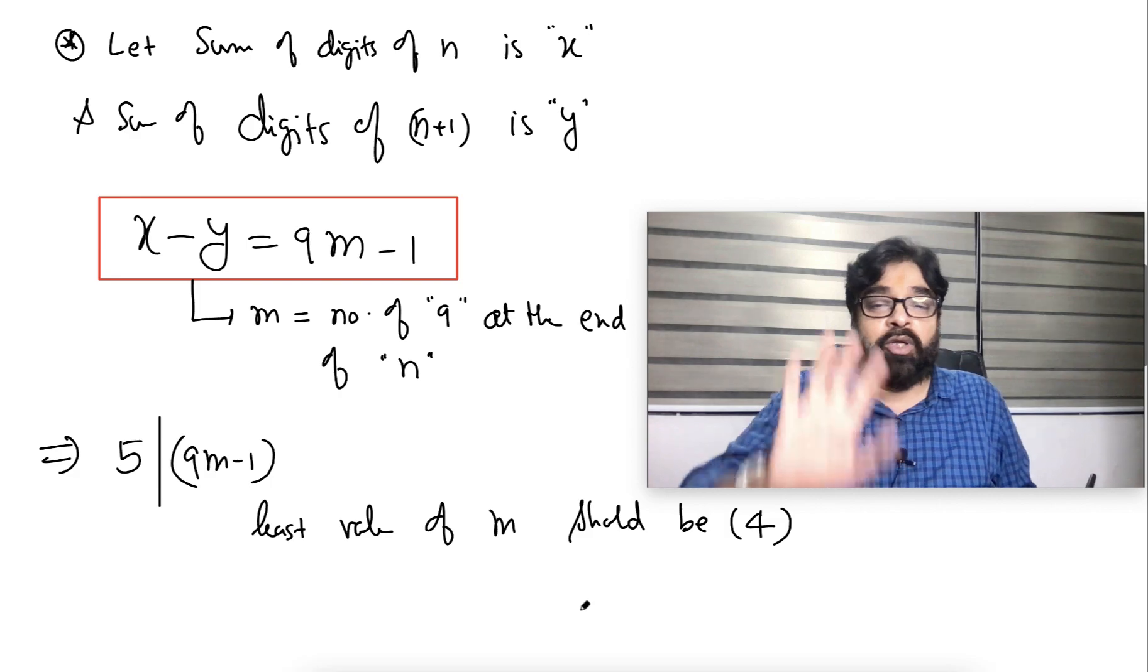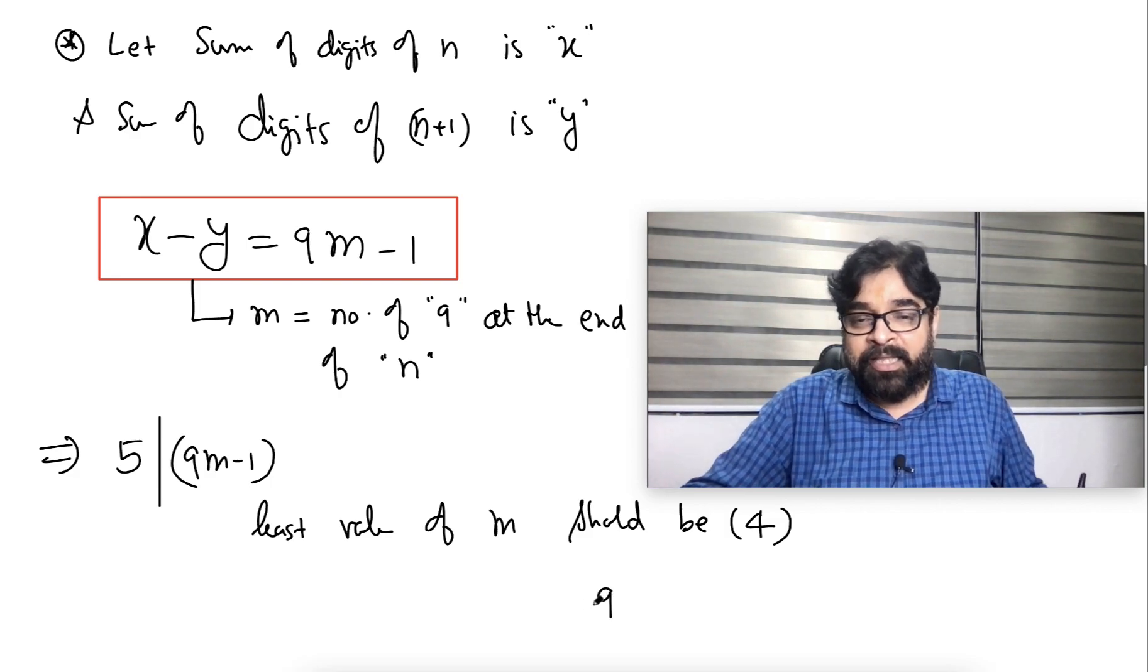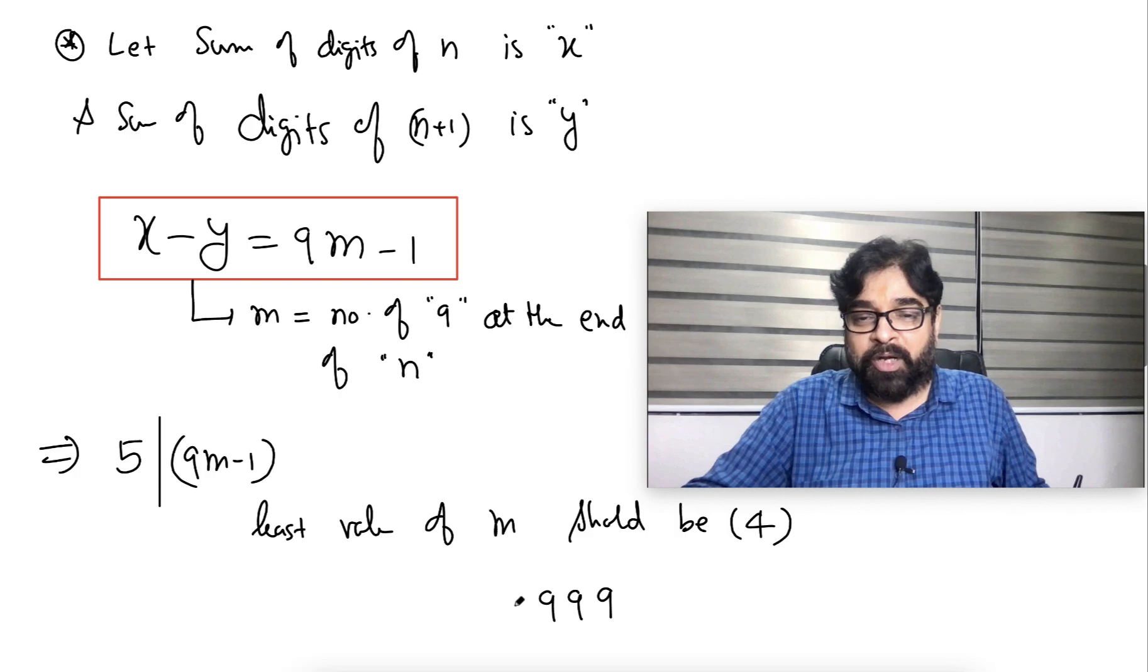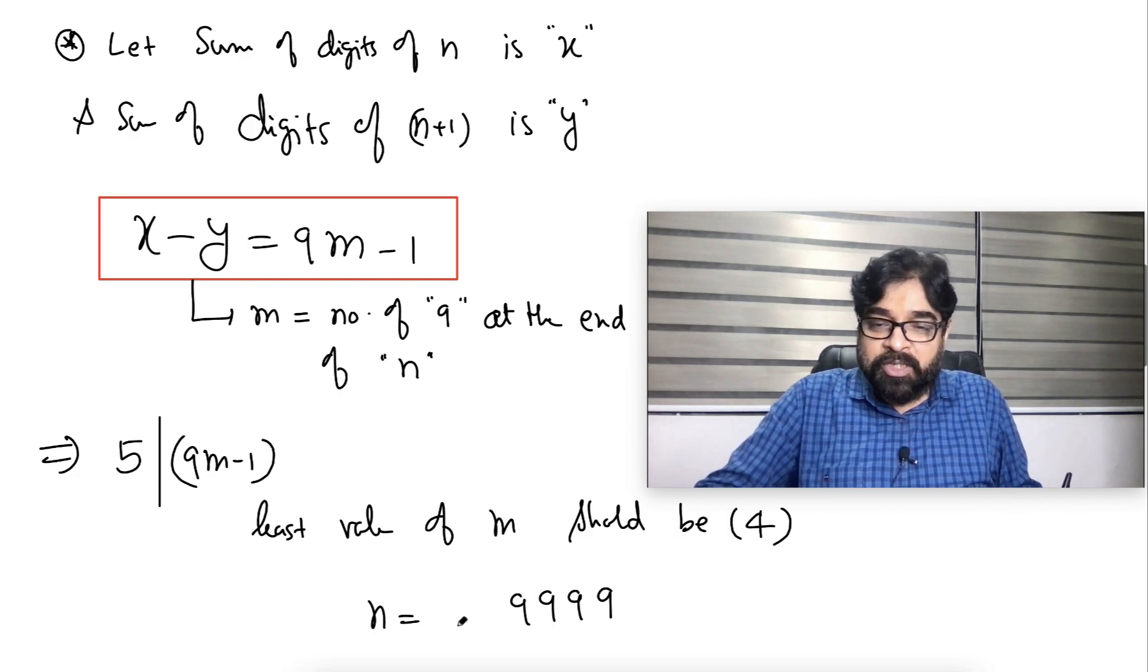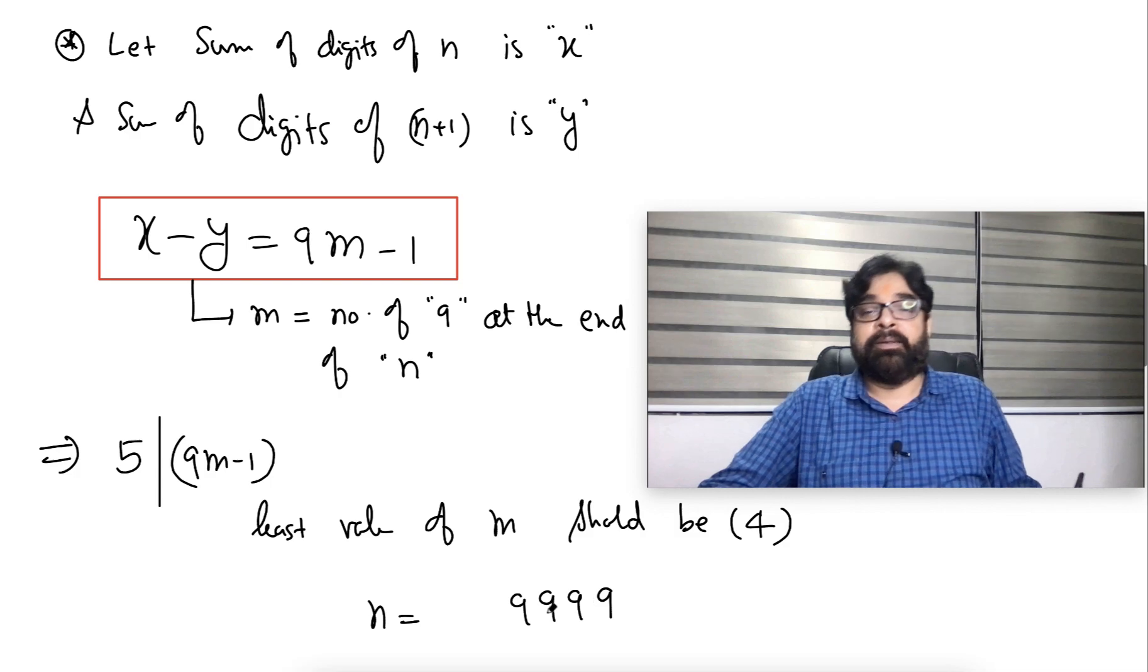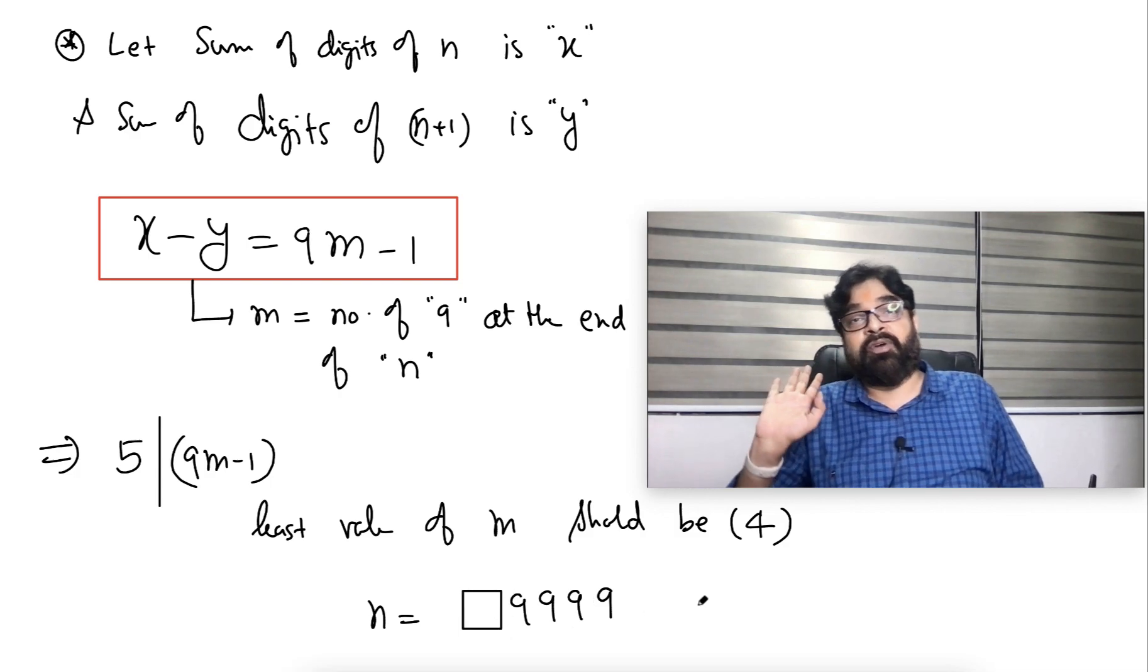So I know now the number, that number what we are asking, there at the end, 4 nines surely is there. Means, n equal to something, something, 9999. Because at the end, four 9s should be there. This is the confirm. Of this something, I have to fill it.